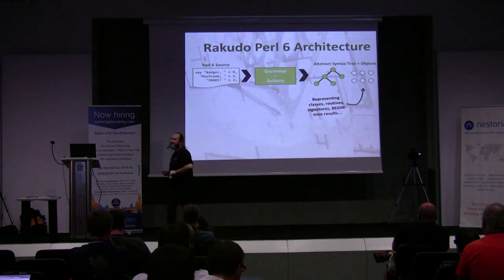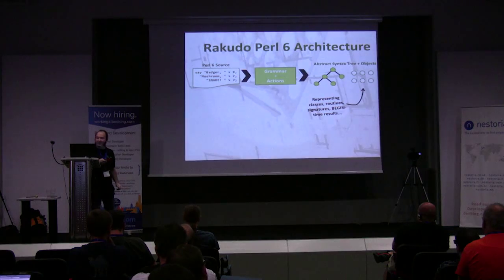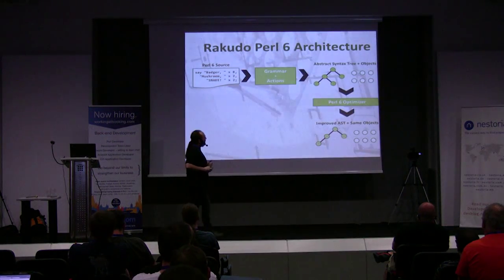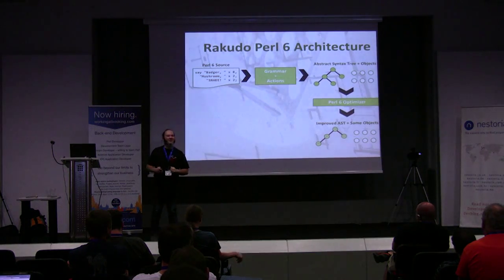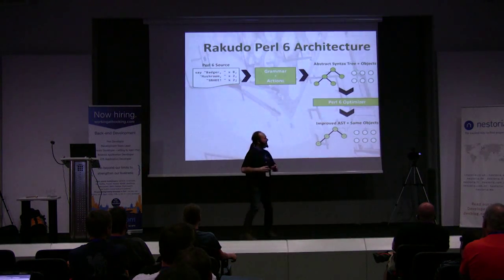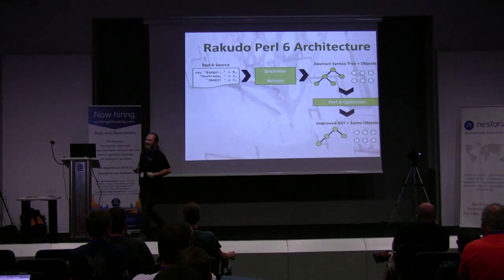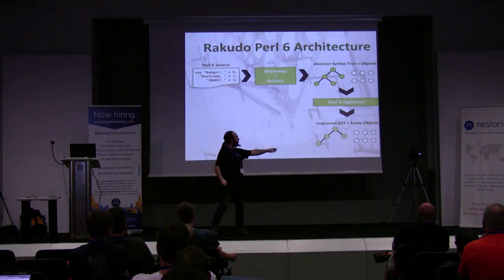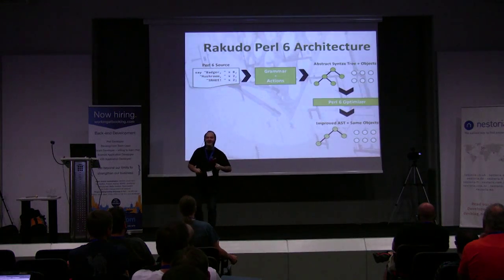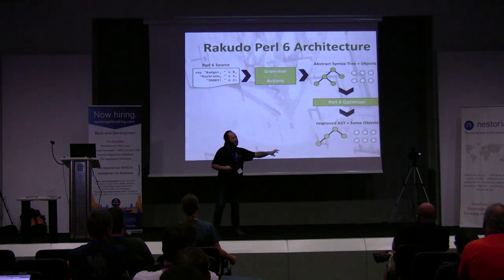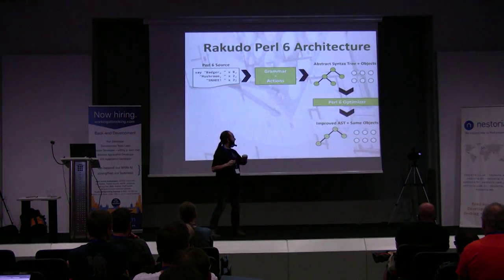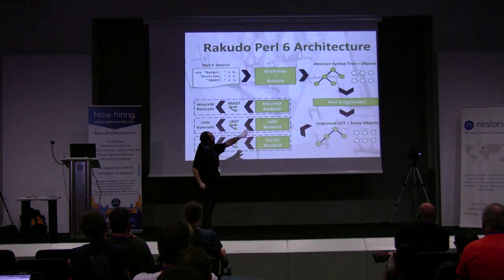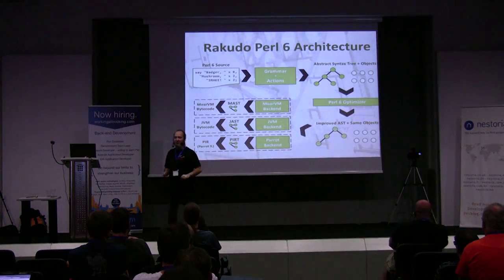We get this tree and we have these objects, and we feed it into the Perl 6 optimizer. The optimizer basically takes the tree, looks at it, looks at certain bits and says 'that's stupid,' then rewrites it to try and make it into something less stupid — spitting out a better tree. Then the Perl 6-specific bit is over, and the AST goes into one of a number of what we call backends.